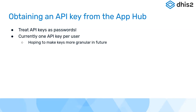Please don't commit API keys to any public repos — store them as a secret in your CI pipeline. Most pipelines allow you to do that, and feel free to contact me if you need help setting that up. Currently you get one API key per user, and we're hoping to make that more granular in the future — maybe multiple API keys per user or per organization, so you can really separate your different roles and responsibilities. If you have any feedback about how that should look, please get in contact.